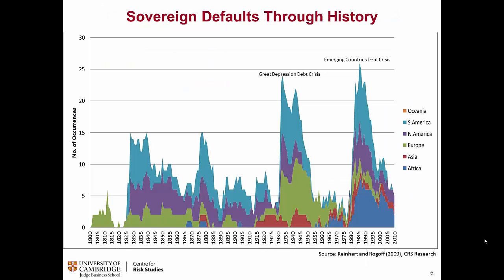This graph shows the last 200 years of defaulting countries. On this line, we have the total number of countries in default, and some could have larger durations, which would make the count higher. It is categorized by various continents. The peak events point to the Great Depression debt crisis and also the emerging country debt crisis in the 1920s.